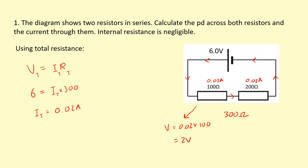I don't even need to do the calculation for the next one, because I know the total has to add up to 6. So if this one is 2 volts, this must be 4. However, I'm going to do the calculation anyway. Applying Ohm's law to the 200 ohm resistor: V equals 0.02 times 200, which again gives me 4 volts, adding up to 6.